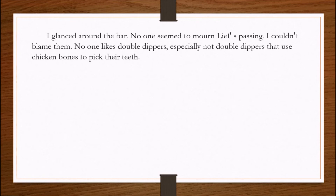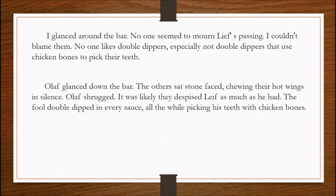And here is an example of an internal monologue written in the third person. 'Olaf glanced down the bar. The others sat stone-faced, chewing their hot wings in silence. Olaf shrugged. It was likely that they despised Leaf as much as he had. The fool double dipped in every sauce, all the while picking his teeth with chicken bones.' Notice how the third-person view is just as vivid, if not more vivid, than the first-person passage. When you write in third person, imagine you are a ghost taking temporary possession of your character's body. When you enter them, observe their surroundings and their actions. What do you notice? Do you smell the stale beer on your barbarian friend's breath? Are you angry about the size of the hot wings? Is the bartender a good-looking wench? Depending on your character's personalities, they might view the same scene in a totally different light.